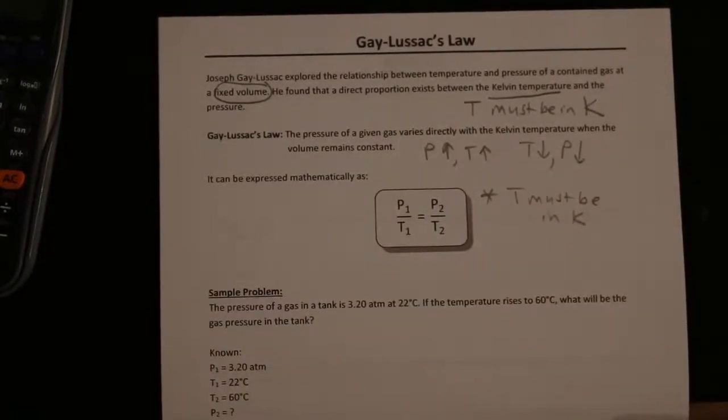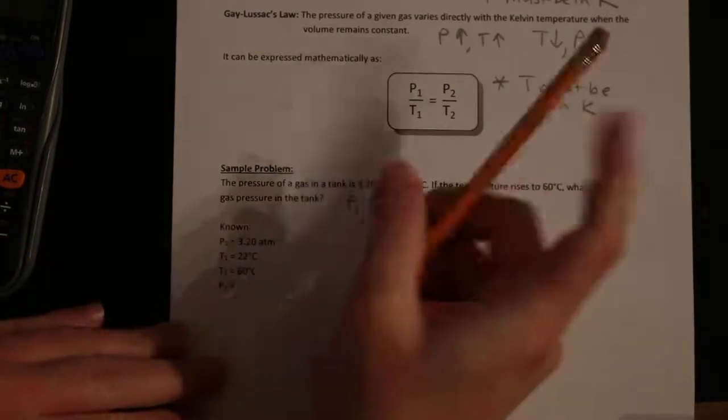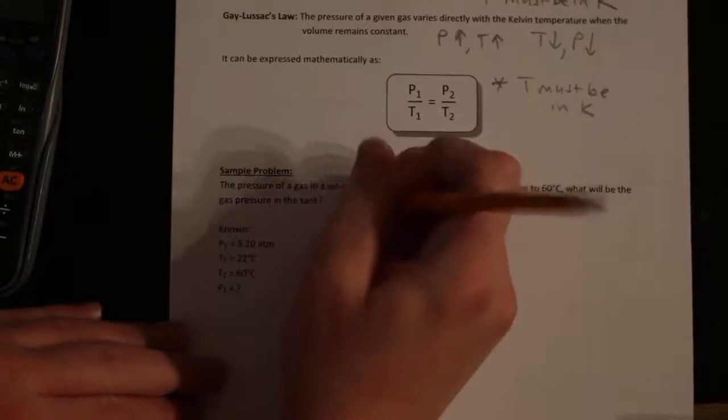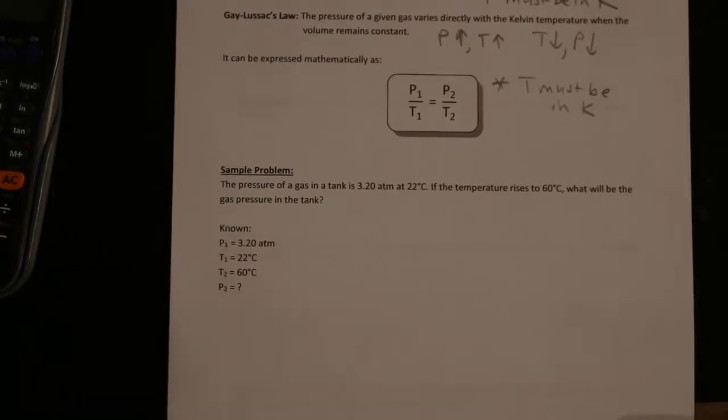So let's do a quick example to see what this looks like. This is on page 35 of your notes. The pressure of a gas in a tank is 3.2 atm at 22 degrees Celsius. If the temperature rises to 60 degrees Celsius, what will the gas pressure be in the tank? So the first thing to do is write down all of the variables. P1, T1, T2, and P2 is what we're trying to find, so we leave a question mark there.